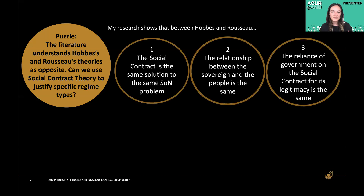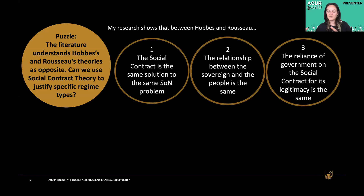If a government only exists because the people of the state of nature have come together to form a contract giving their consent to something to rule them, then that government's legitimacy relies on that contract. The purpose of the contract — and of government — is to provide a situation better than the state of nature. If the government fails to do that, they're not fulfilling the contract. If they don't fulfill the contract, the consent initially given is also nullified: without fulfilling the contract, the contract is nullified, consent is removed, and government becomes illegitimate. This doesn't necessarily mean the government will dissolve — they may persist in ruling — but their rule becomes illegitimate.